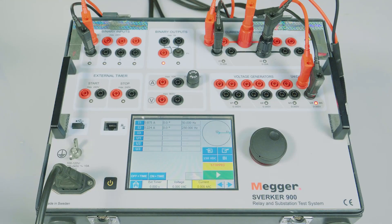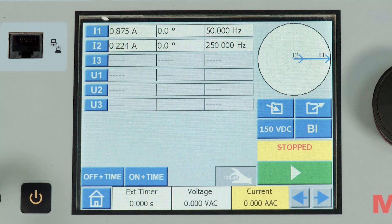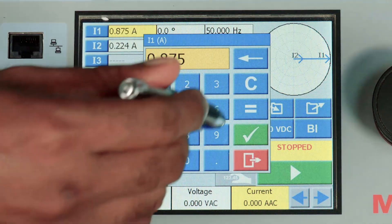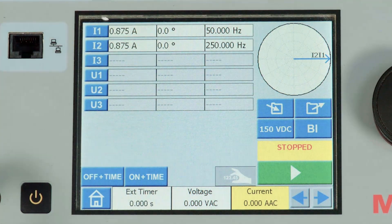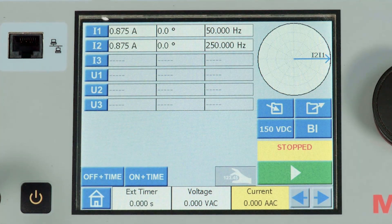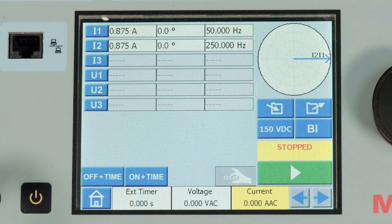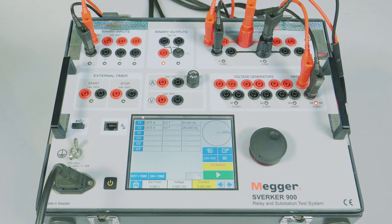Now let us verify the non-operate to operate method. In this method we will inject 0.875 angle 0 at 50 hertz in CT1 and 0.875 angle 0 at 250 hertz in CT2. The relay should pick up in differential. However, the tripping should not be executed.